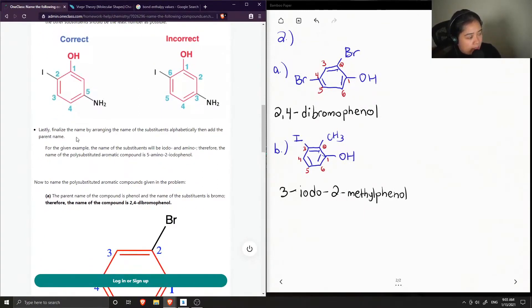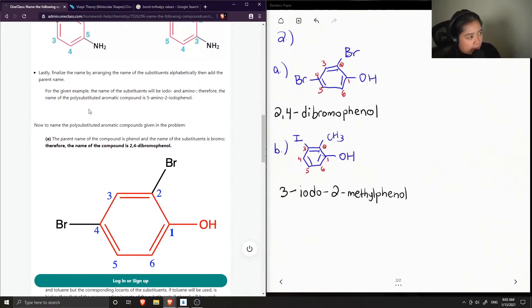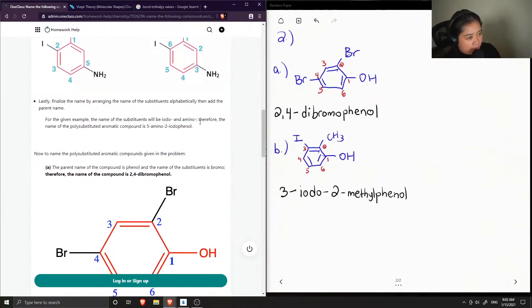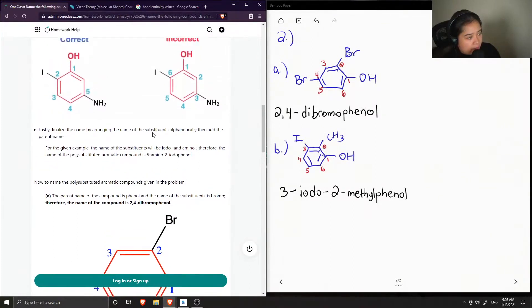Lastly, finalize the name by arranging the name of the substituents alphabetically, then add the parent name. For the given example, the name of the substituents will be iodo and amino. Therefore the name of the compound is 5-amino-2-iodophenol.